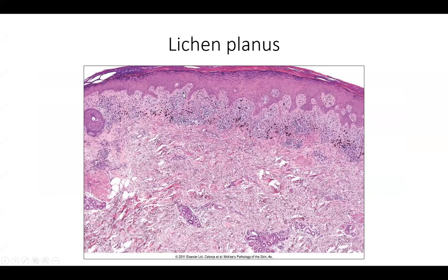Another example from McKee's pathology textbook shows a lichenoid inflammatory infiltrate where the dermal-epidermal junction is not as heavily obscured. You can still trace the rete ridges taking on a sawtooth morphology. From low power you see the band-like shape of the lymphocytic inflammatory infiltrate with scattered melanophages. There are areas where lichenoid inflammation interacts directly with the overlying epidermis.